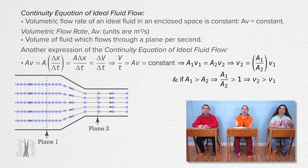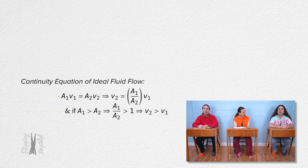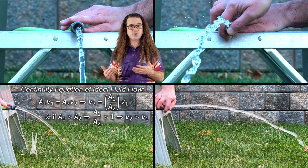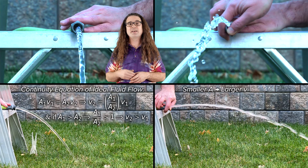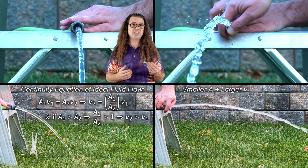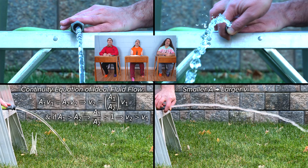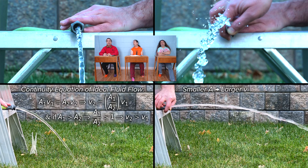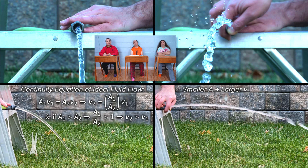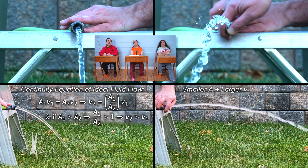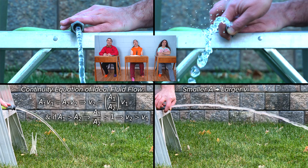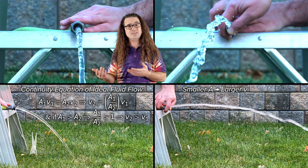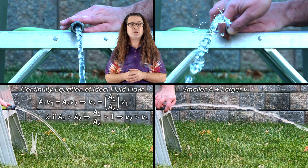That's what happens when you put your thumb over the end of a hose. If you have a garden hose with water flowing out of it, you can put your thumb over the end to decrease the cross-sectional area and therefore increase the velocity of the water. You can see the water is moving faster because it has a larger displacement in the x direction in projectile motion. This is a simple way anybody can demonstrate the continuity equation of ideal fluid flow.